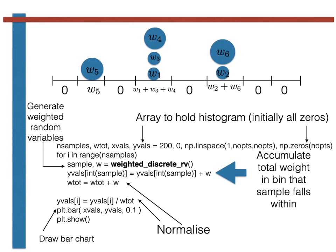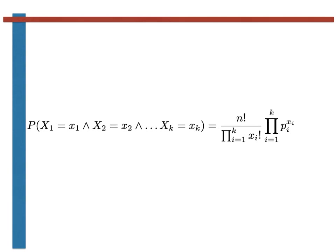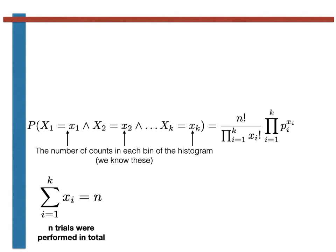When we discussed unweighted histograms we noted that the number of points in each of the bins was a sample from the multinomial distribution that is shown on this slide. In this expression the x1, x2 and so on were the number of counts in each of the bins in the histogram and the sum of all these quantities was thus n.